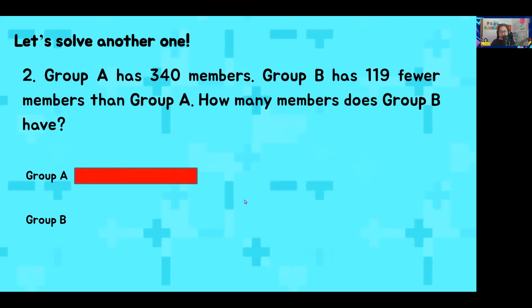Next, Group A will need a model. So, that's the red one here. And from the word problem, we know that Group A has 340 members. So, we write that down. For Group B, it says here that Group B has 119 fewer members than Group A. So, this helps us answer who has less, who has more, who has fewer. Group B has fewer than Group A from the word problem. So, Group B's model should be shorter. Very good.